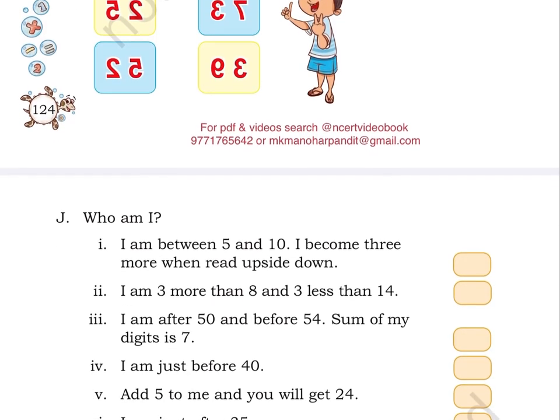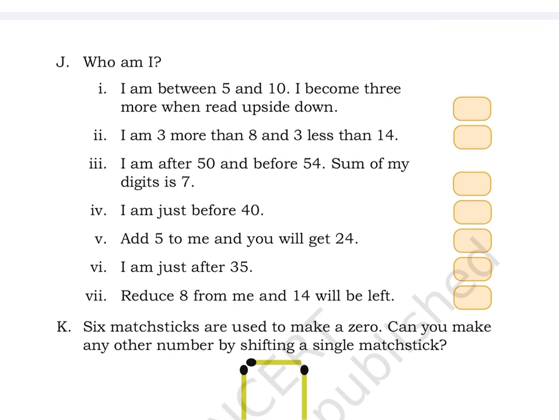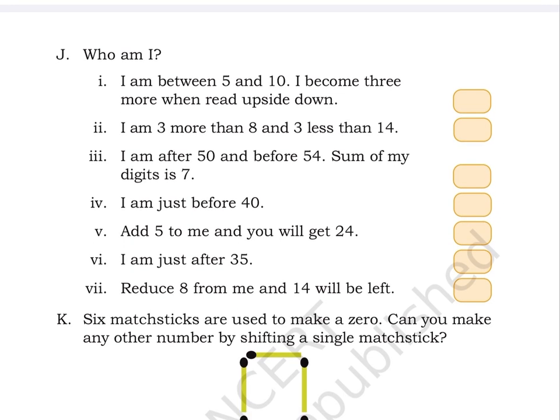Page number 125. Puzzle J: Who am I? 1. I am between 5 and 10. I become 3 more when read upside down. 2. I am 3 more than 8 and 3 less than 14. 3. I am after 50 and before 54. Sum of my digits is 7.